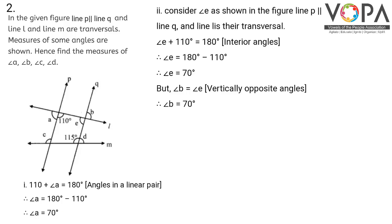Consider angle E as shown in the figure. Since line P is parallel to line Q and line L is their transversal, angle E plus 110 degrees equals 180 degrees as they are co-interior angles. So angle E equals 180 minus 110, which is 70 degrees. Angle B is equal to angle E as they are vertically opposite angles. Therefore, angle B is also 70 degrees.